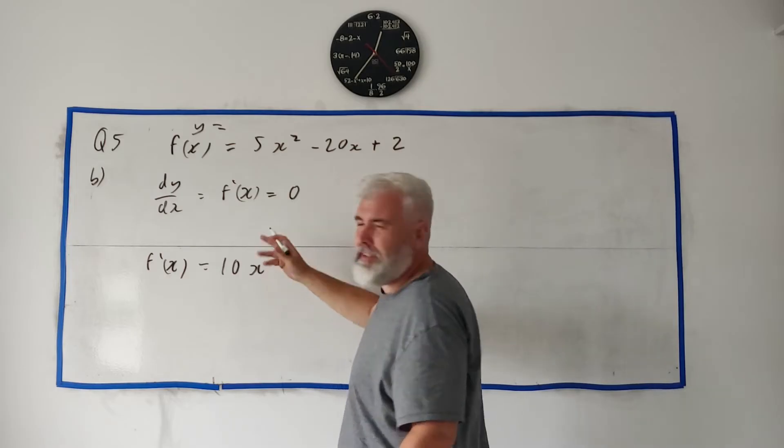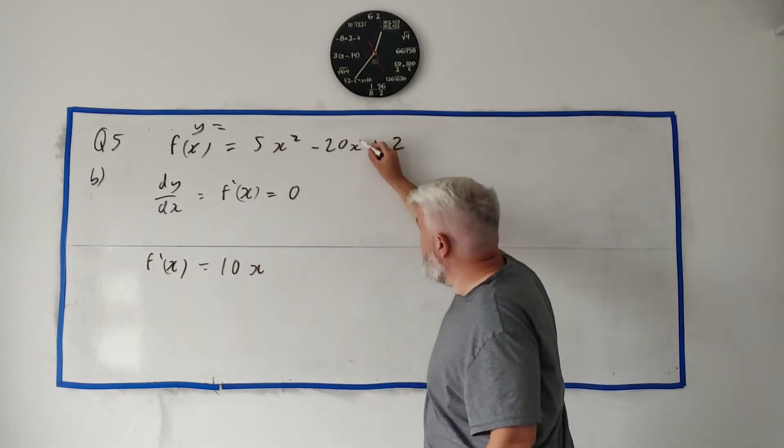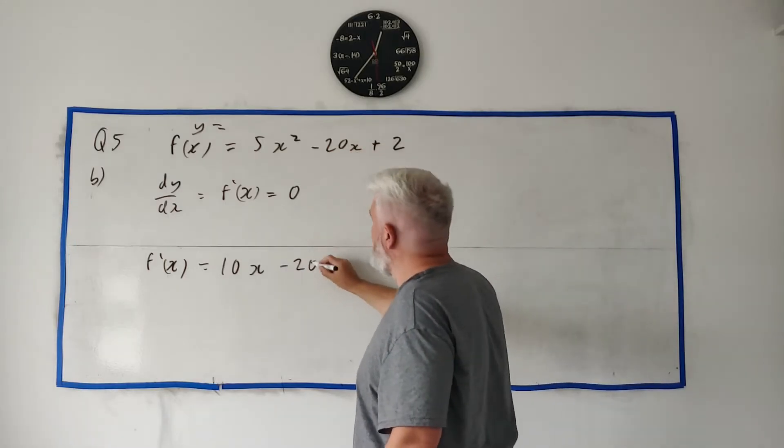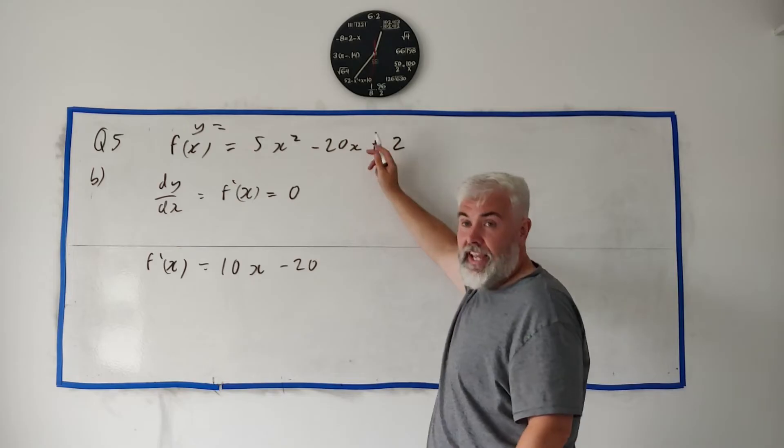Okay there's a 1 up here, and 1 times 20, or minus 20, minus 20, and we take one away from this x, and that's x to the power of 0 which we don't have to write in.